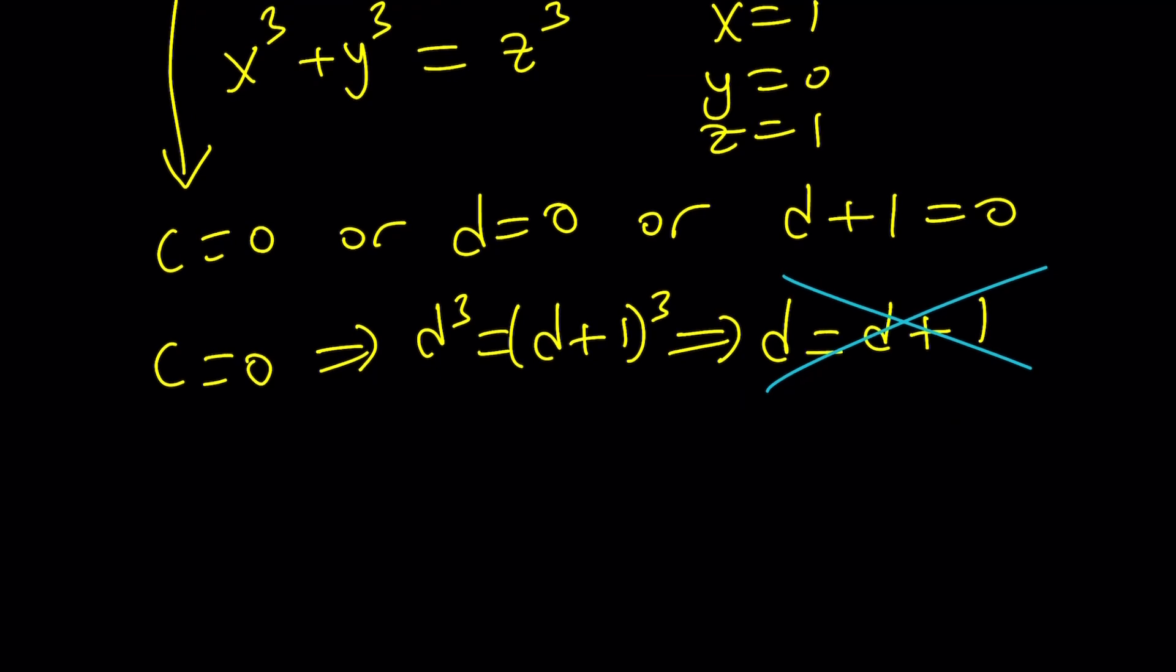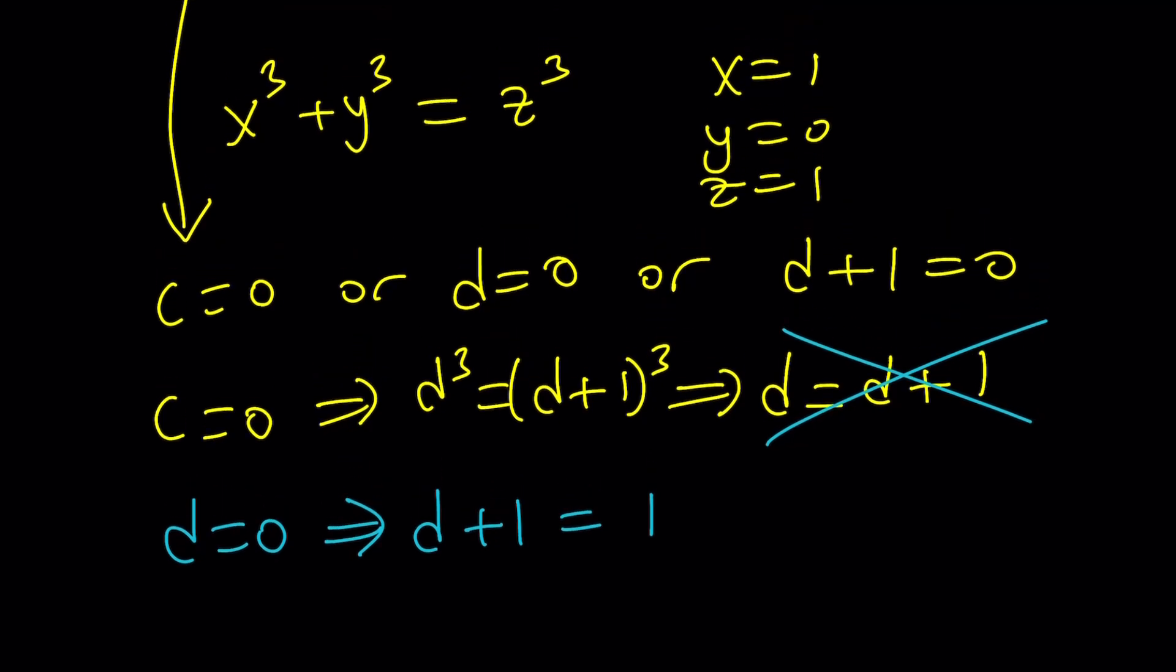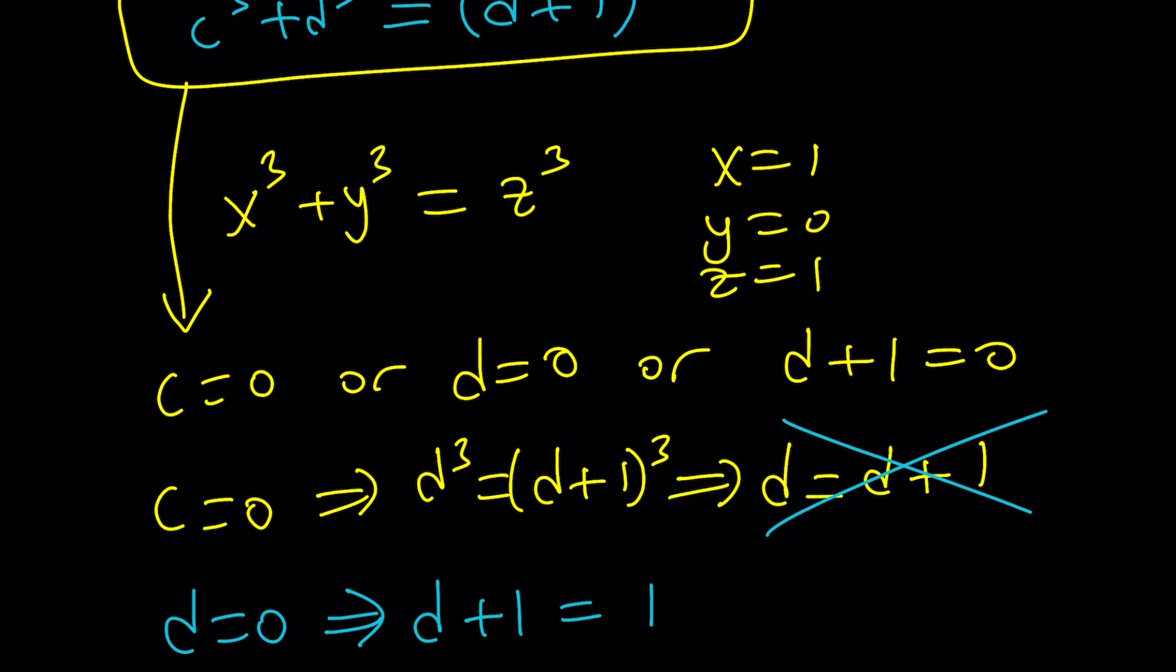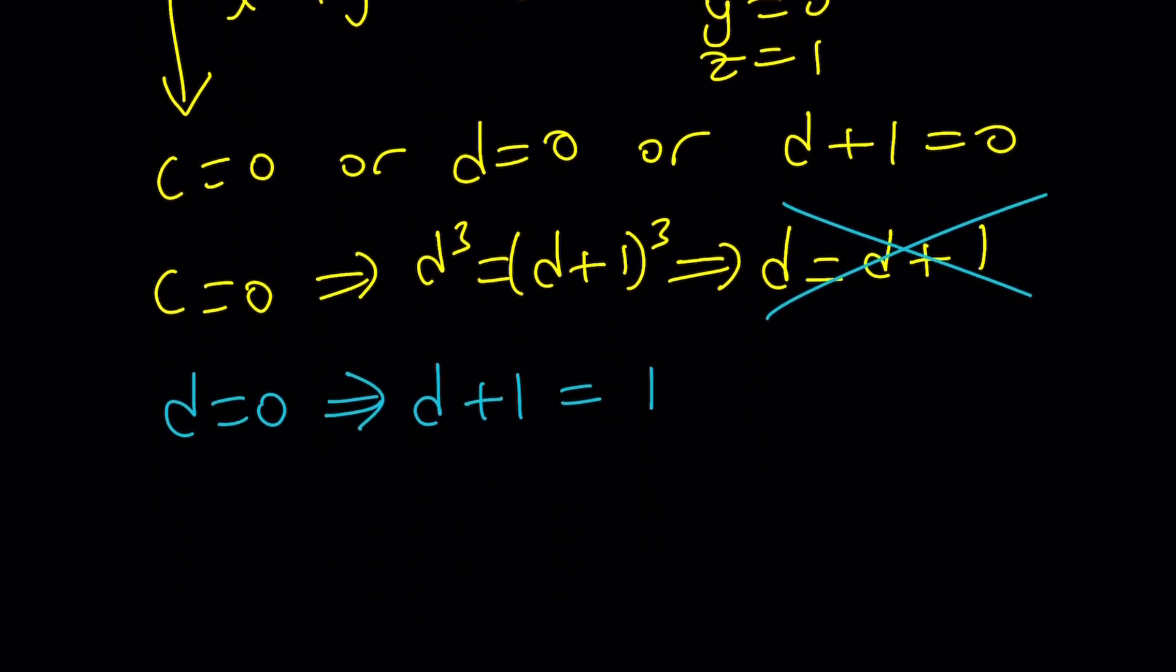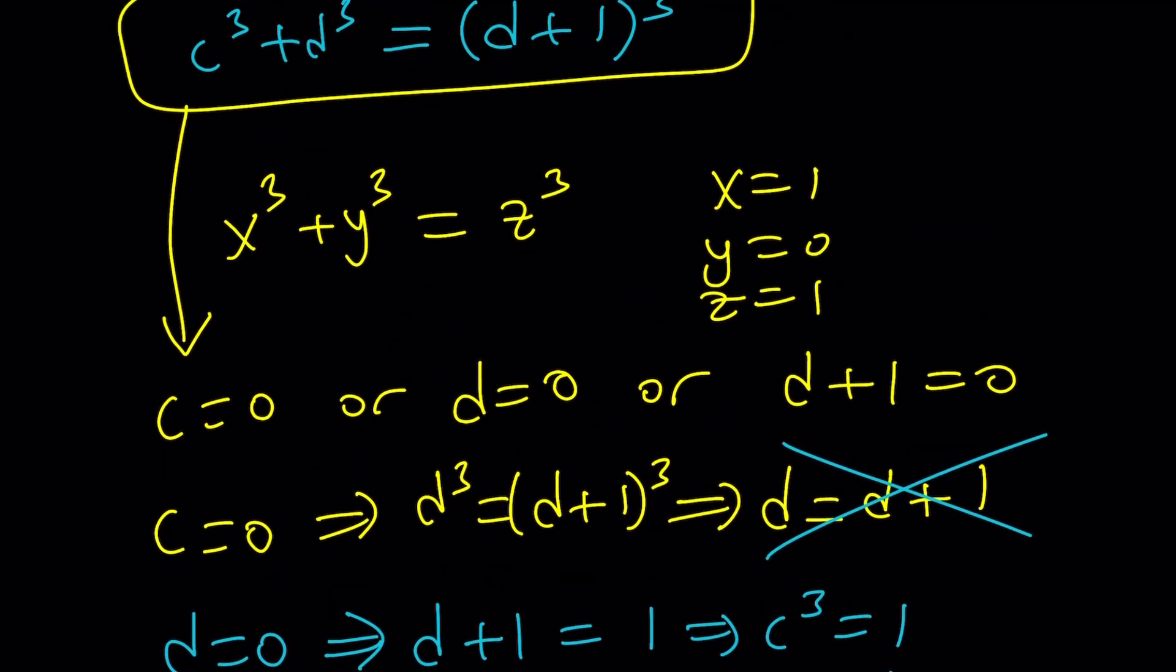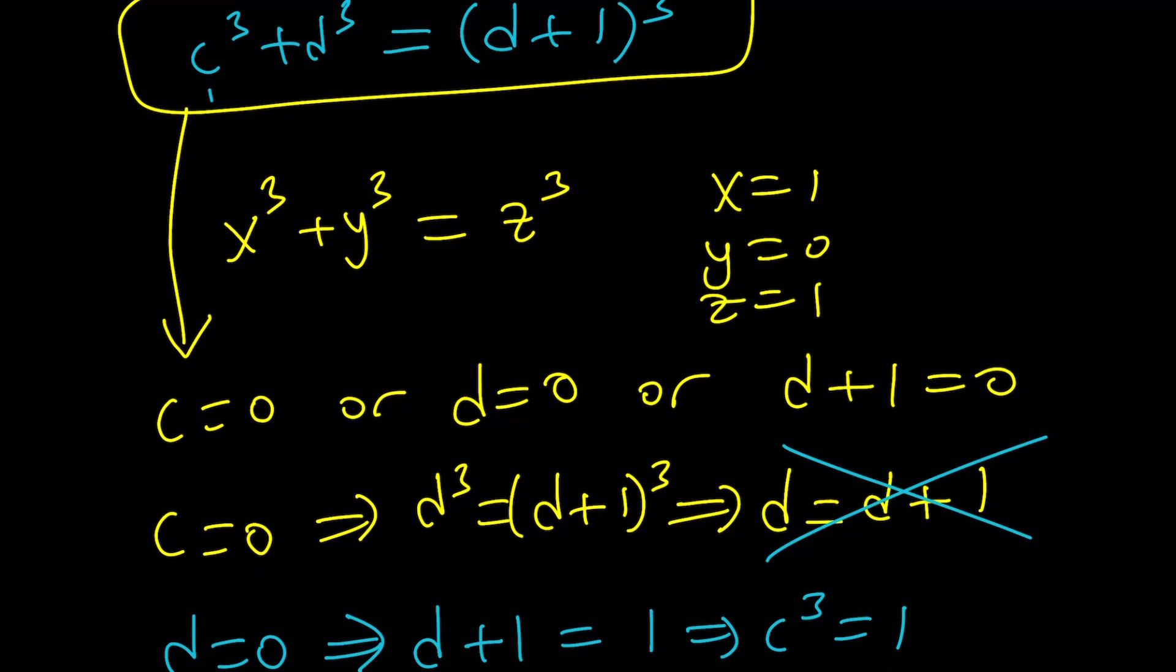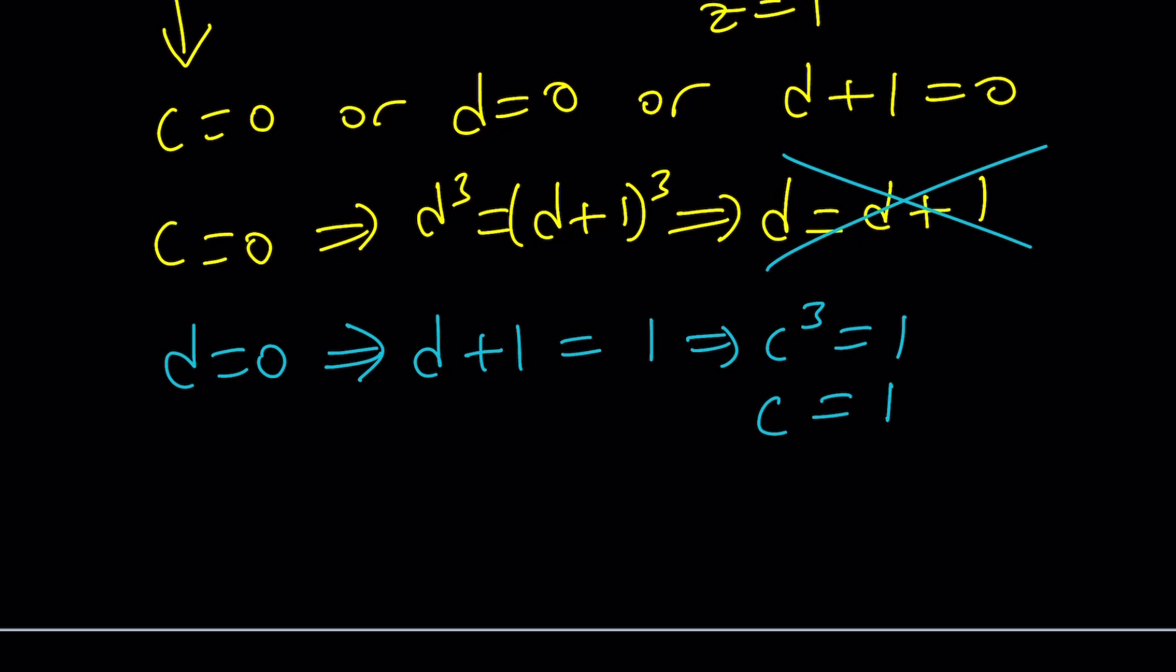How about D = 0? If D is equal to 0, then we get d + 1 is equal to 1. Because if you just plug in 0 to the equation, you're going to get d + 1 = 1. And from here we get D = 0. From here we get c³ = 1 and c = 1. Now if C is equal to 1 and D is equal to 0, let's go back to the original equation. C is 1, D is 0. This is going to work. Notice that it works.